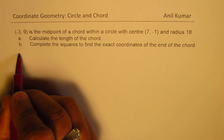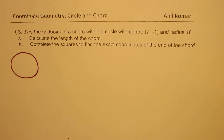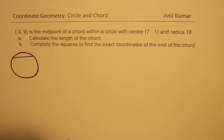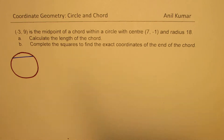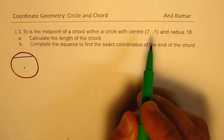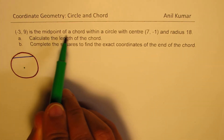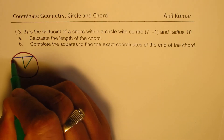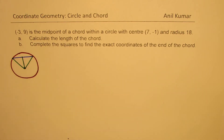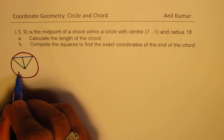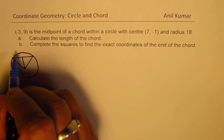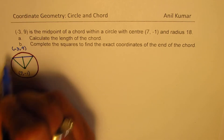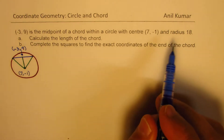So basically we are given a chord in a circle. Let me draw a circle here. Let's assume this is a circle and we're talking about this particular chord. The center of the circle is given at seven, minus one. Minus three, nine is the midpoint of the chord, so let me join this with the midpoint and also the end points. The center is seven, minus one, the midpoint is minus three, nine, and the radius is 18.